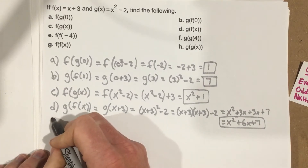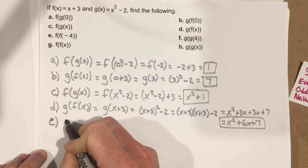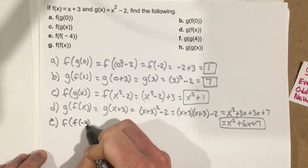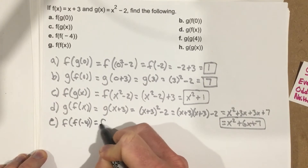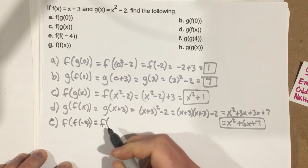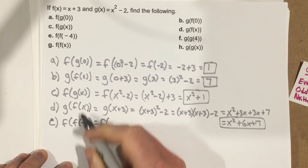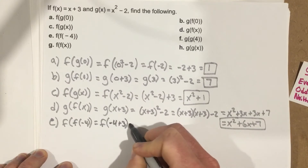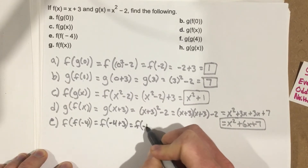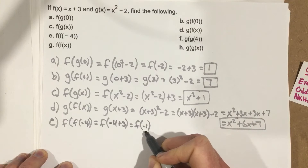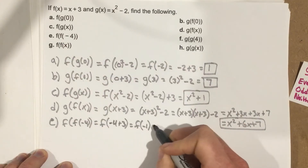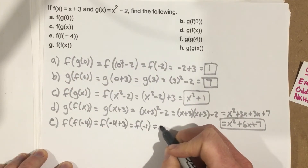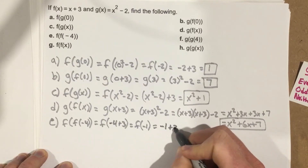Part e: f of f of negative 4. I plug negative 4 into f first: negative 4 plus 3 is negative 1. Then f of negative 1: negative 1 plus 3, which is 2.